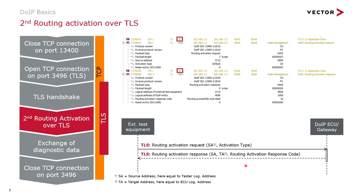Now a second routing activation sequence takes place, this time using encrypted communication over TLS. The good news is that CANU can decrypt these messages if it knows the master secret of this TLS session, and CANU can even act as a communication endpoint if the corresponding certificate is configured in the security profile of this endpoint.